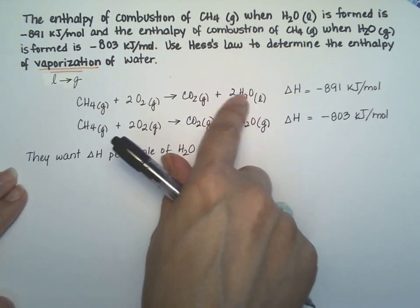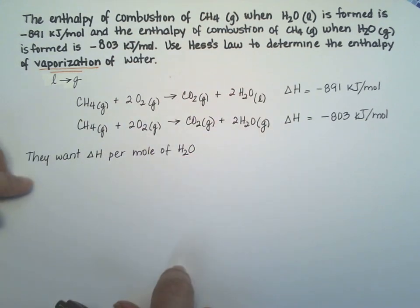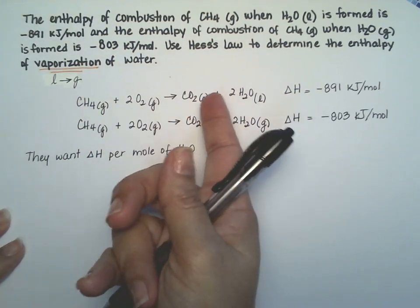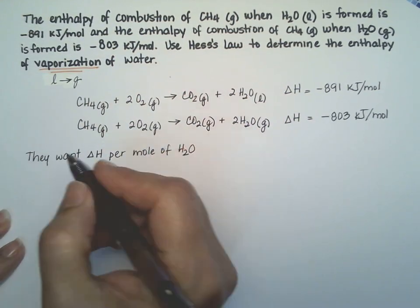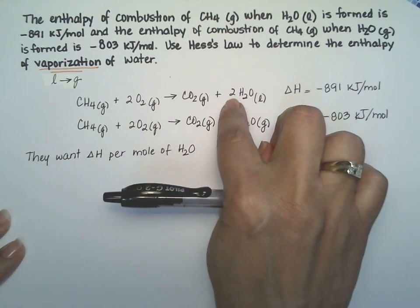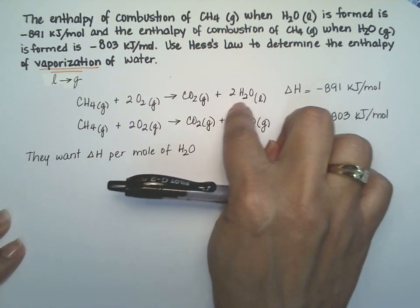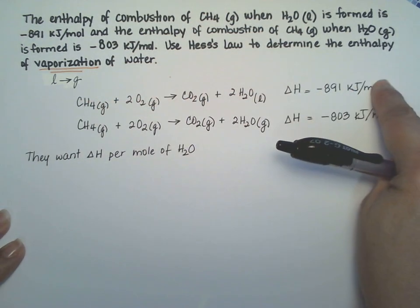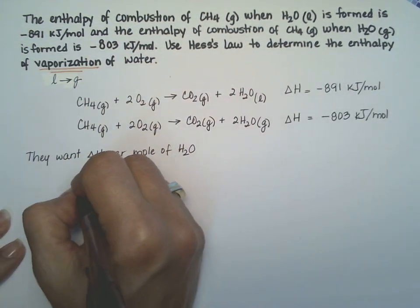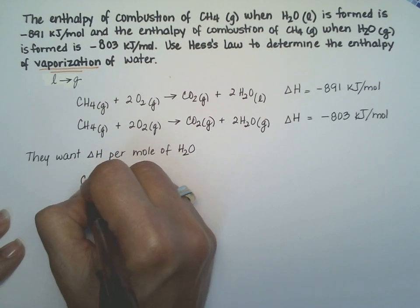Alright, so let's start with the top one. We said that we need liquid as a starting reagent because we want liquid water going to gas. So we're going to flip the top reaction. You flip it and you divide by two because I only want one mole of the water. So I'm going to do that little by little. Let's just go ahead and flip it first.